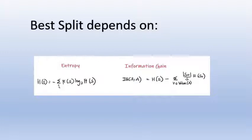The best split depends on the entropy and information gain on the nodes. Entropy means impurity. In this case, the information gain depends on entropy.